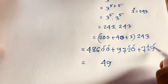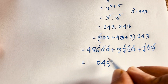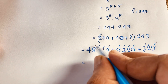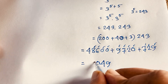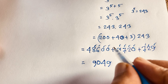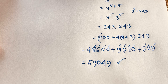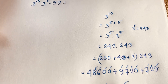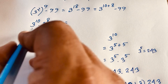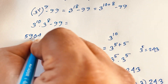Completing the addition: 7 plus 7 is 14, plus 6 is 20, carry 2. Then 9 plus 9 plus 8 plus 2 is 19, carry 1. Then 1 plus 4 is 5. So 3 to the power 10 equals 59049.